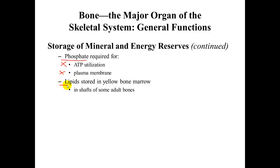Finally, lipids are stored in the yellow bone marrow. Yellow bone marrow is inactive bone marrow composed primarily of fat, found in the shafts of some adult bones in a structure called the medullary cavity.